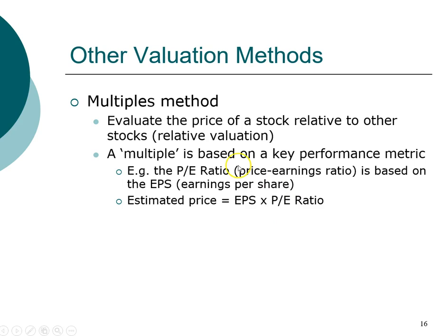The downside concerns earnings per share. What is the quality of this metric? Do firms have control over this number? Is this number reliable? That is a topic we'll discuss later when we look at financial statements. Accounting and finance are related primarily because a lot of the information that finance analysts use is based on financial records created by accountants. If there are limitations to earnings per share, those limits can greatly interfere with the ability to value a stock using it as a key performance metric.